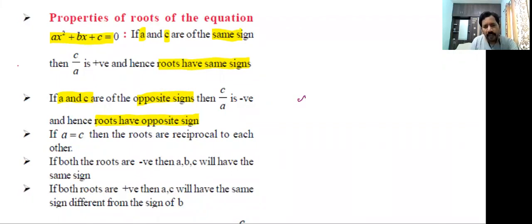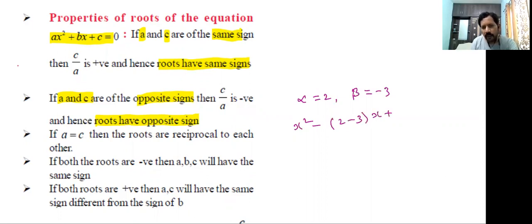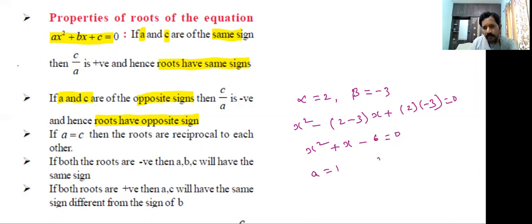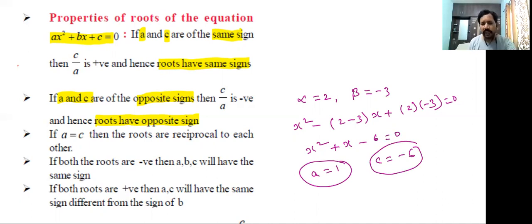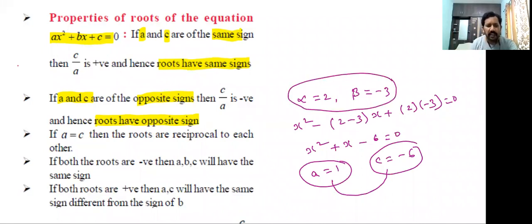For example, take alpha = 2 and beta = -3. Forming the quadratic equation: x² - (sum of roots)x + (product of roots) = 0 gives x² + x - 6 = 0. Here a = 1 and c = -6, which have opposite signs, and indeed the roots 2 and -3 have opposite signs. So if a and c have the same sign, roots have the same sign; if opposite sign, roots have opposite sign.